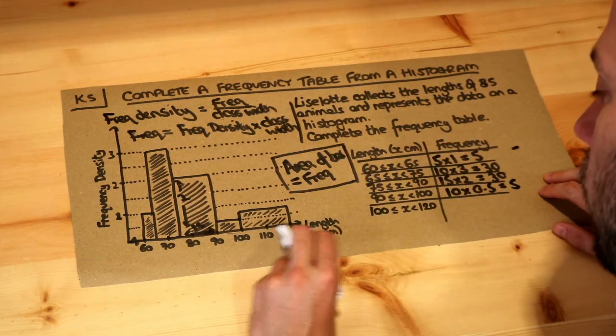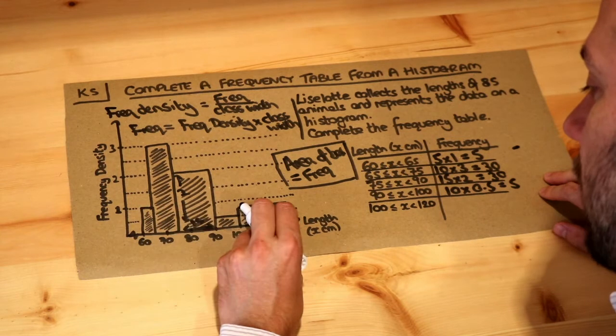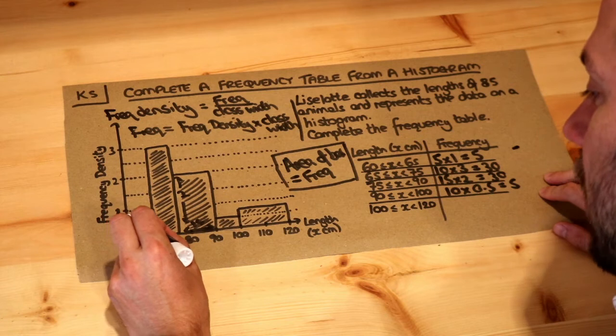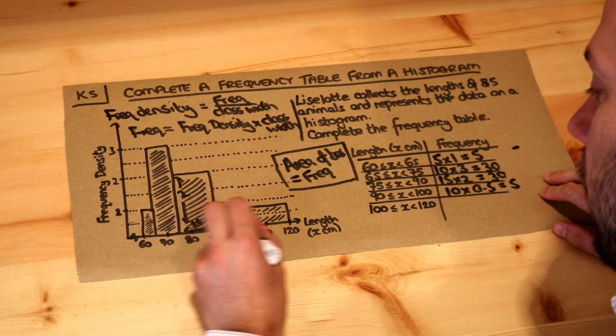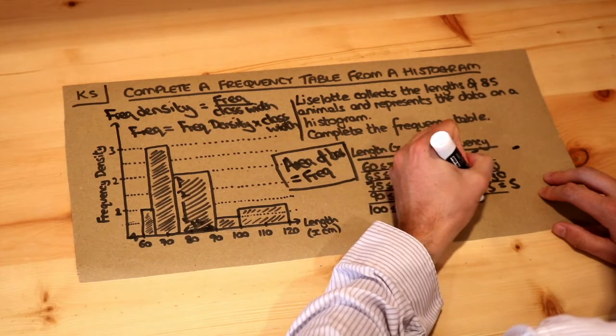And then 100 to 120, that's a width of 20. The height we can see is 0.75, because look, that half bar there is 0.5, which means halfway between 0.5 and 1 is 0.75. So it's 20 times 0.75.